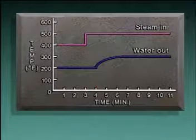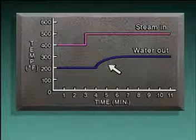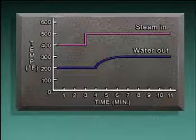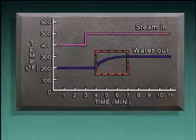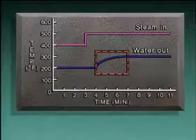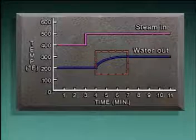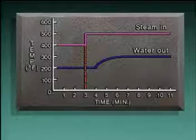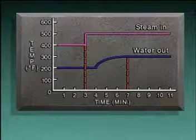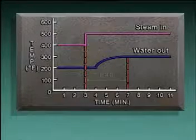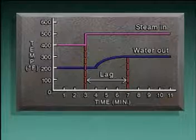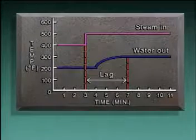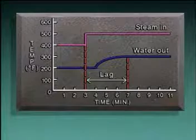Dead time can be thought of as the amount of time required to transfer energy from one point to another. Once the water temperature started to rise, it rose gradually, not suddenly. That's why the shape of the water temperature curve is similar to the dynamic response curve seen earlier. The total amount of time from when the steam temperature changed until the water temperature reached its maximum amount of change is called lag.